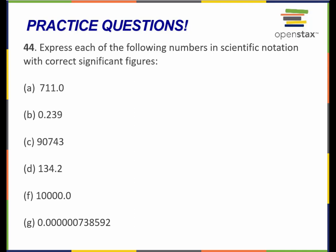Let's look at this first one. Here's my decimal point. I'm going to move it right here, in between those first two numbers, between the 7 and the 1. When I move the decimal point there, I'm going to write 7.110 — all these numbers in here.